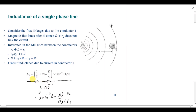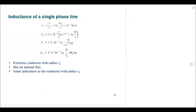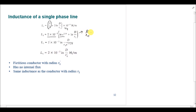To simplify this equation, I take out the common factor 2 × 10⁻⁷. The internal flux term (1/2) × 10⁻⁷ becomes (1/4) when divided by 2 × 10⁻⁷. Using the logarithm property that addition of logarithms equals multiplication of arguments, the expression becomes 2 × 10⁻⁷ × ln(d/r1 × e^(1/4)). Moving the e^(1/4) into the denominator gives r1 × e^(−1/4), where e^(−1/4) equals approximately 0.7788.